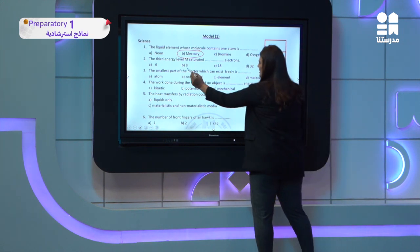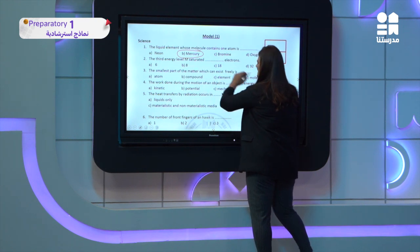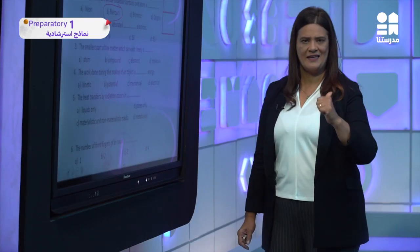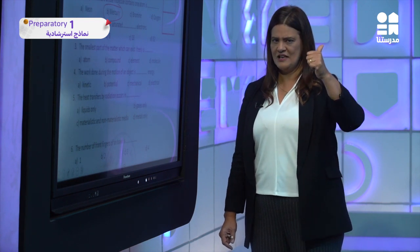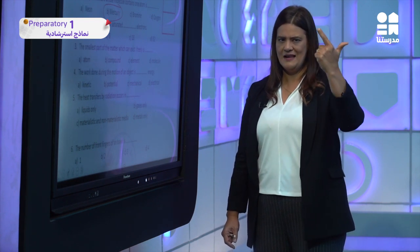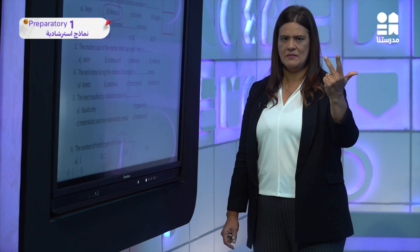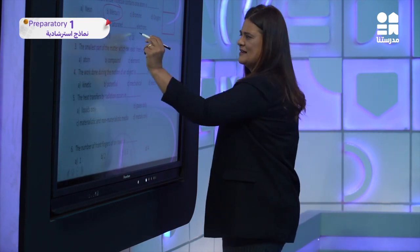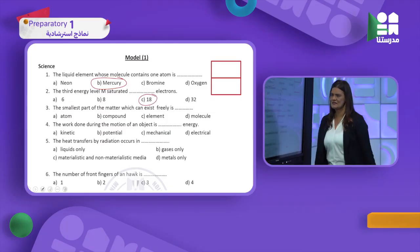The third energy level M is saturated with how many electrons? I have K with 2 electrons, L with 8 electrons, and M with 18 electrons. So the answer is 18 electrons.